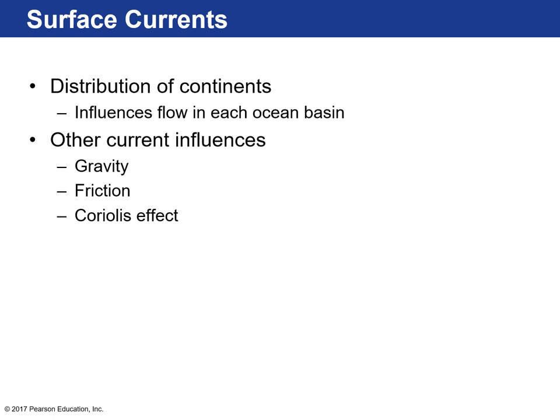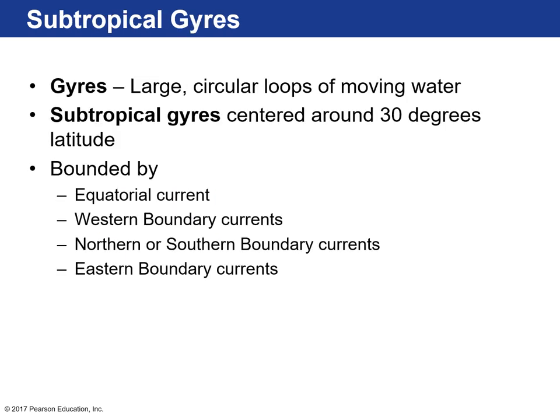Surface currents are influenced by the distribution of continents because ocean water moving in a certain direction will be affected by barriers and turn. Other things that influence surface currents are gravity, friction, and the Coriolis effect — which depends on which hemisphere you're in.